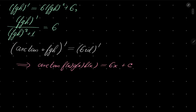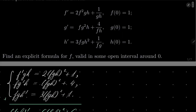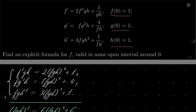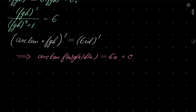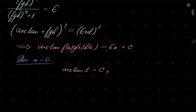Can we find that constant? Yes, because we have initial conditions. f(0), g(0), h(0) are all 1. Plugging in x = 0: arctan(1) equals C. Arctan(1) is π/4, because tangent of π/4 is 1. So now we know our constant.